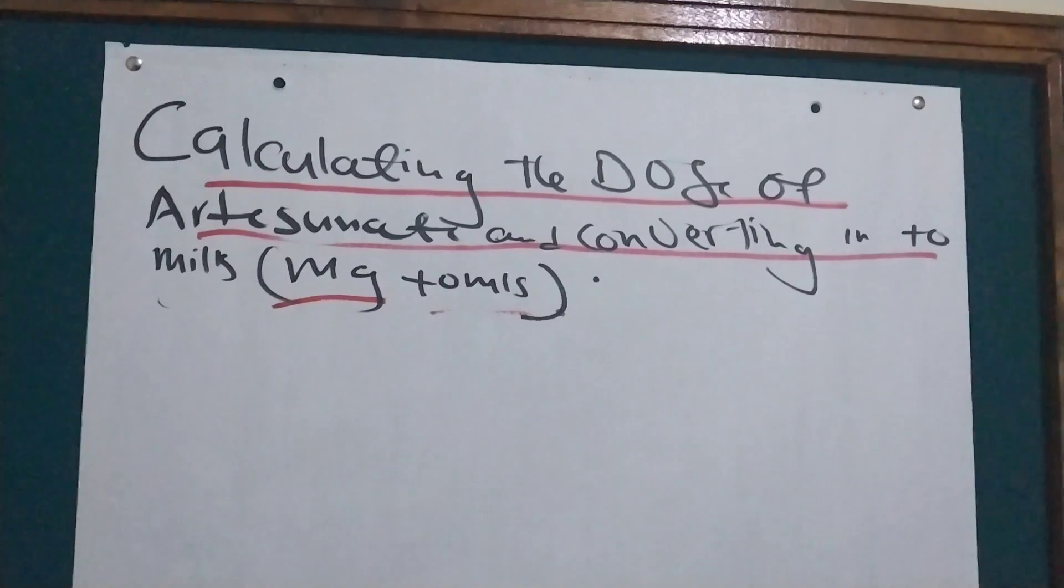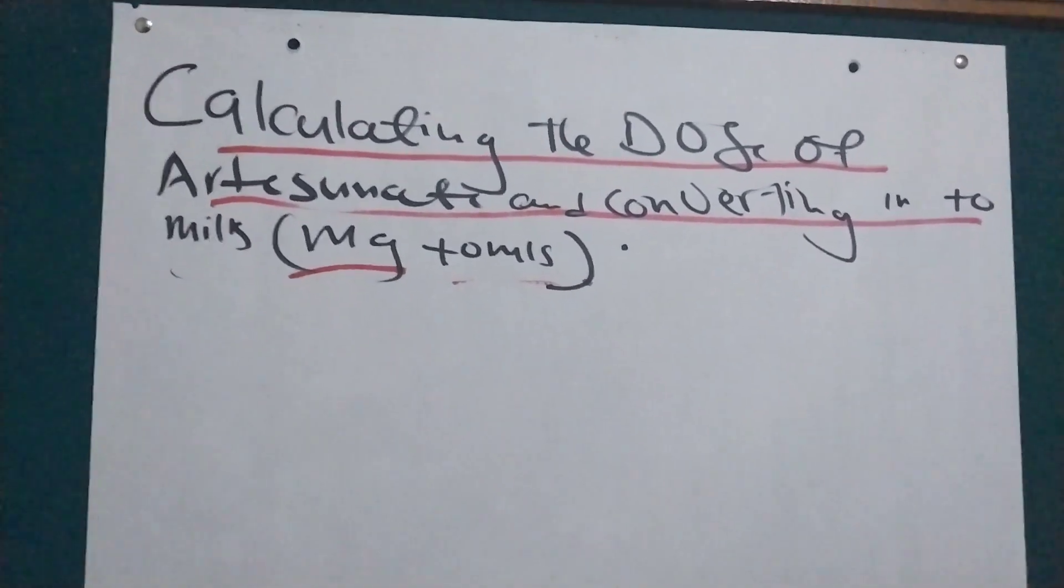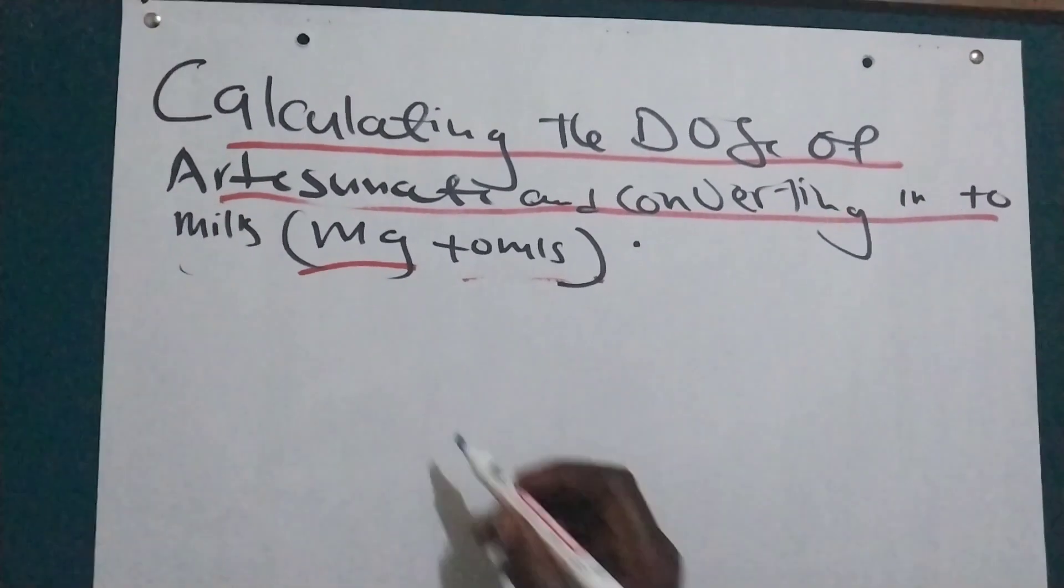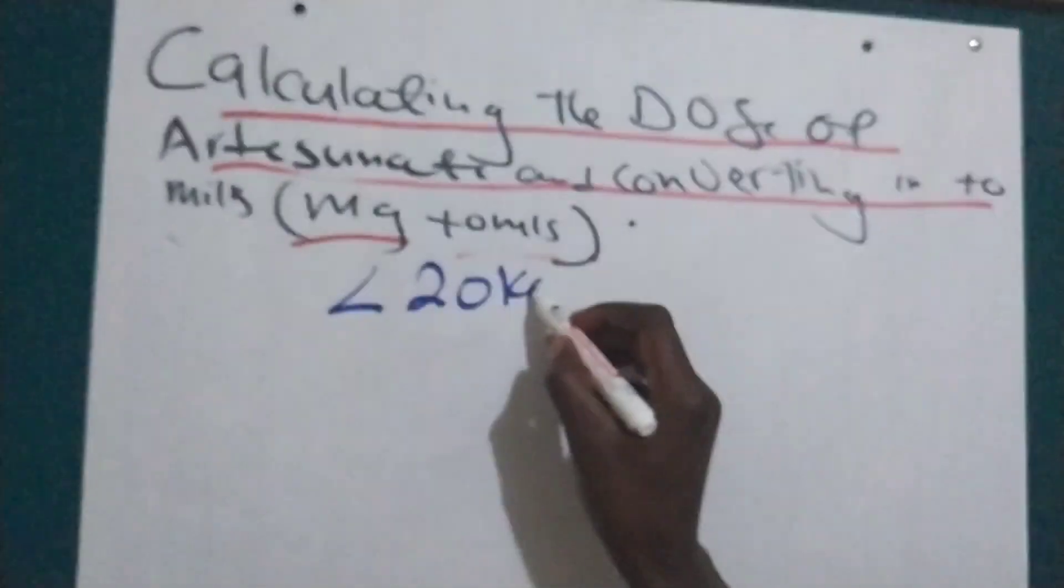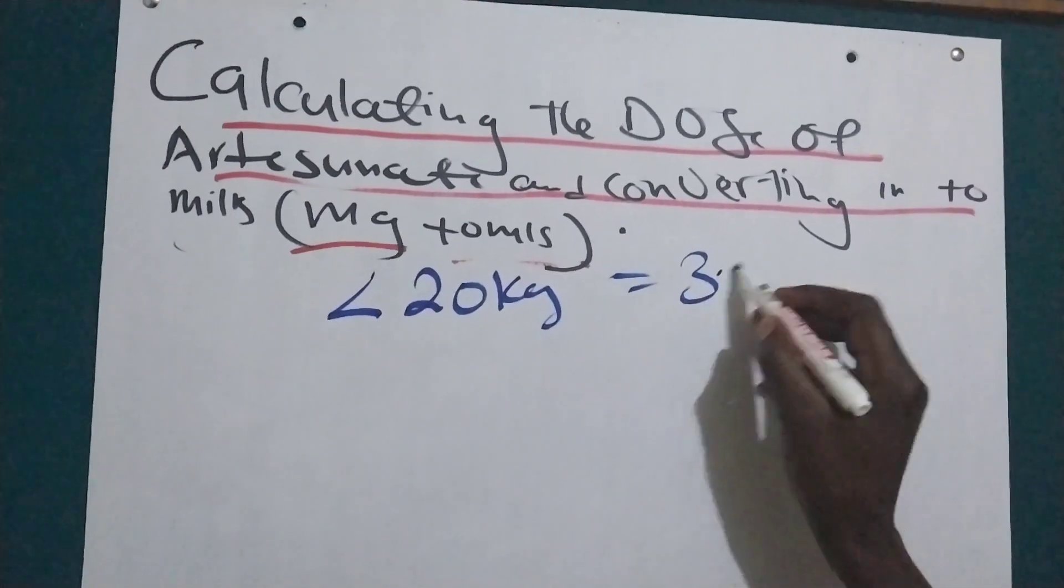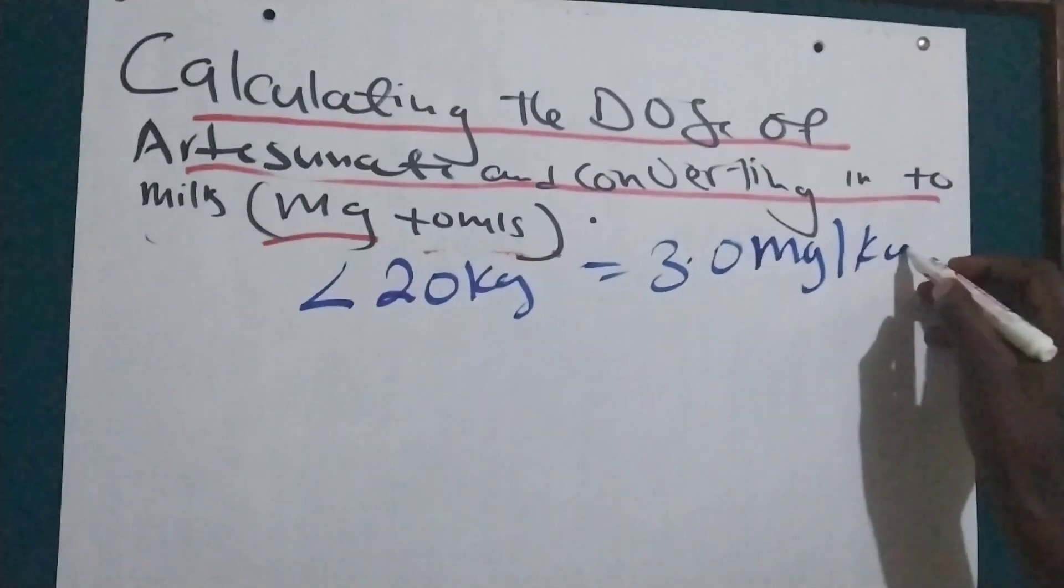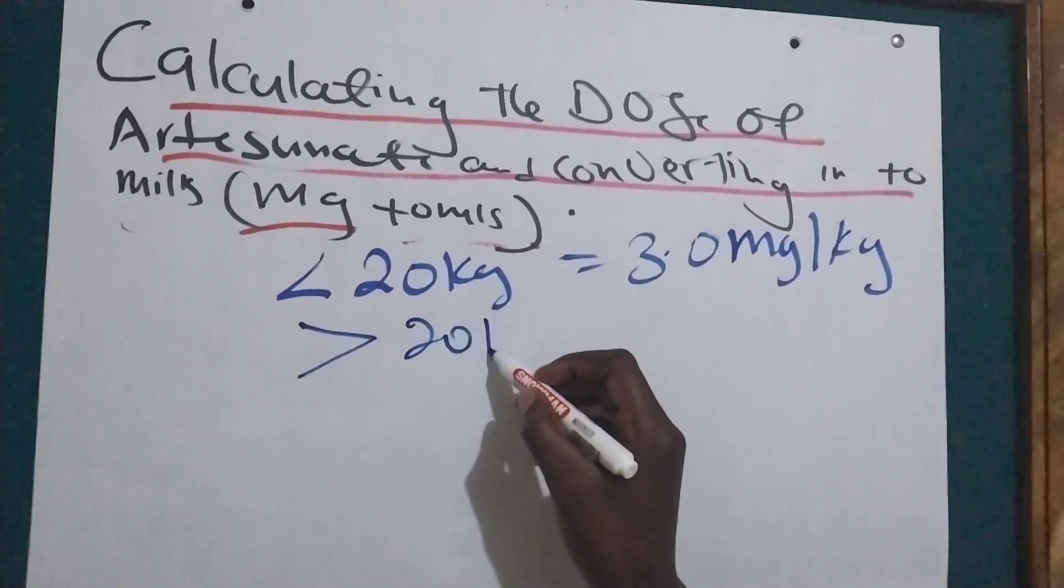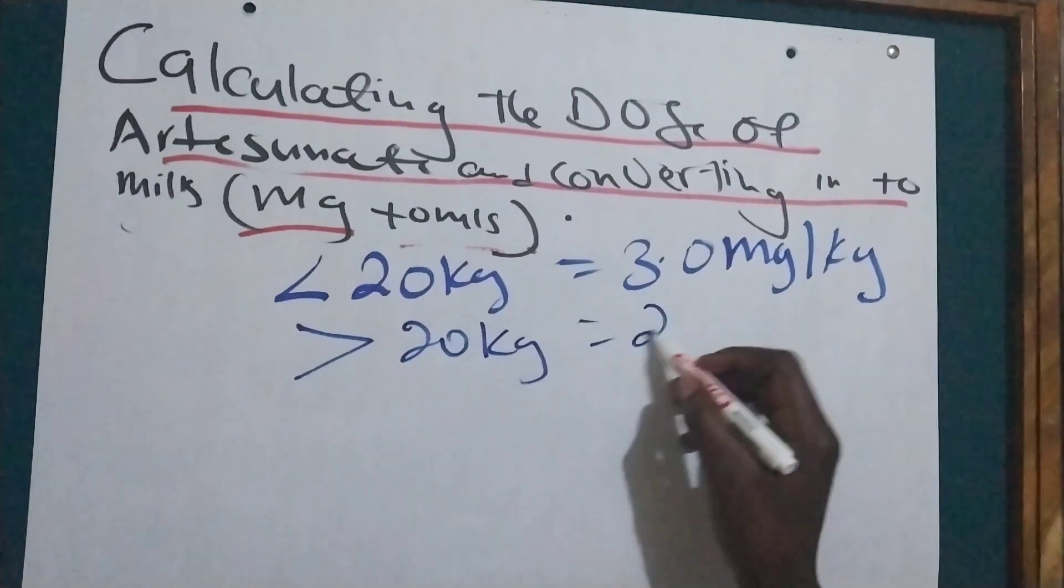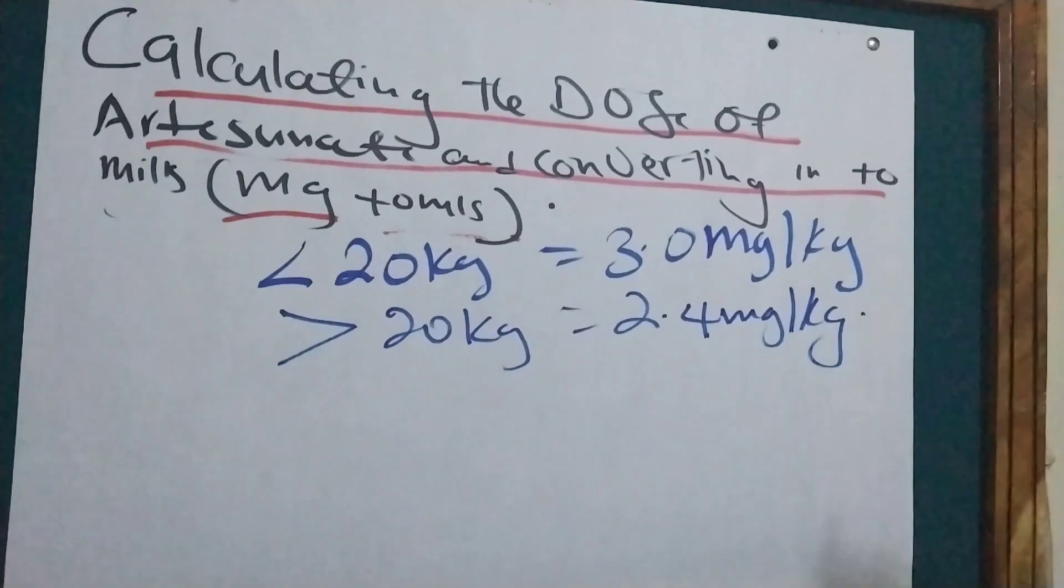All of them will bring us the same answer. Artesunate is calculated according to kilogram body weight. Those ones who are less than 20 kilograms, it is given 3.0 milligrams per kilogram body weight. And then those ones who are greater than 20 kilograms, it is given 2.4 milligrams per kilogram body weight.